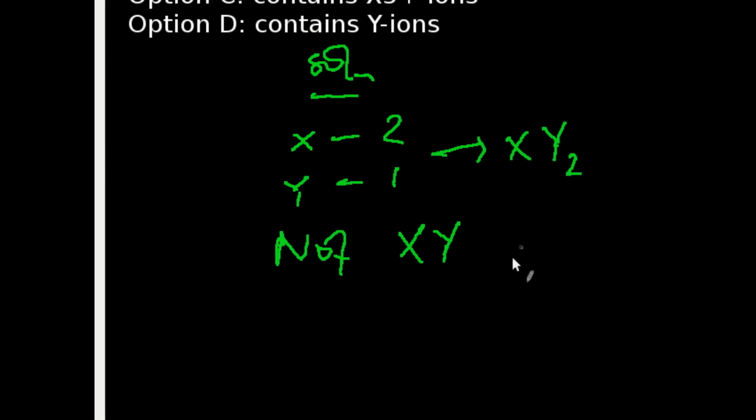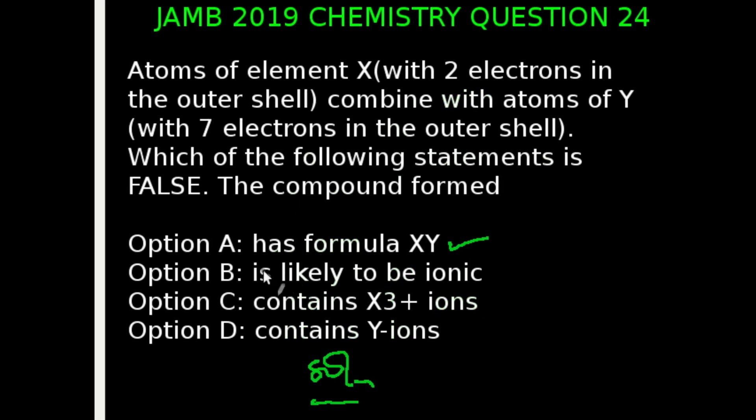And when we cross that, we're going to be having XY₂, and not XY. So the correct answer here is Option A.